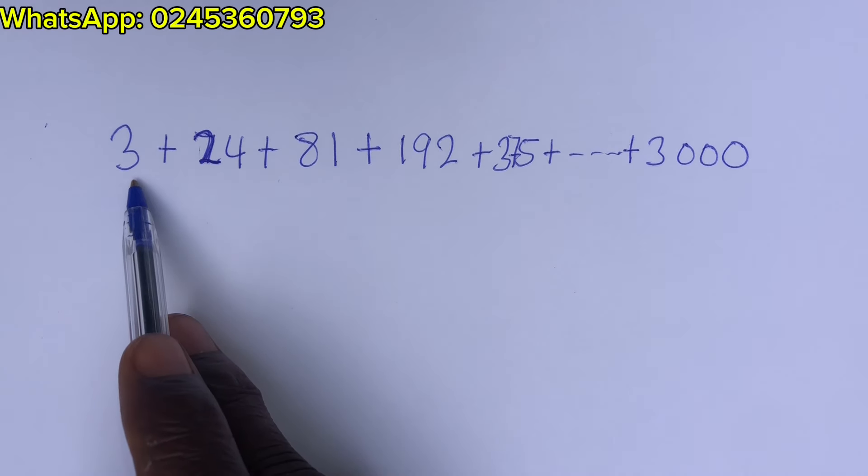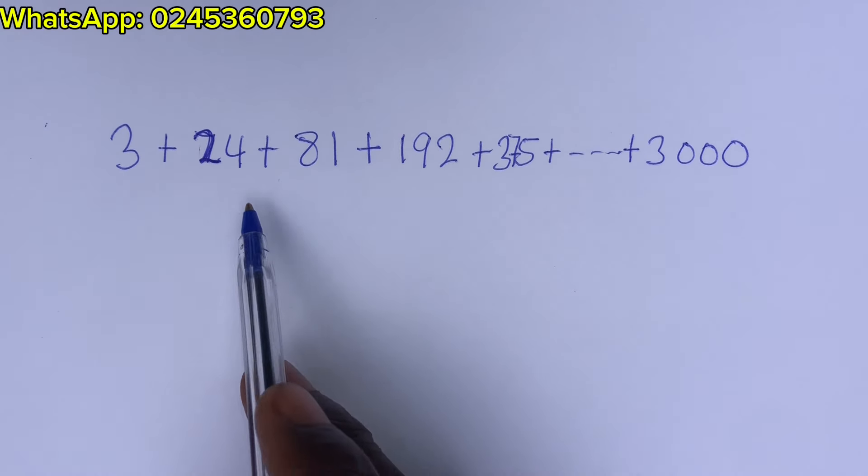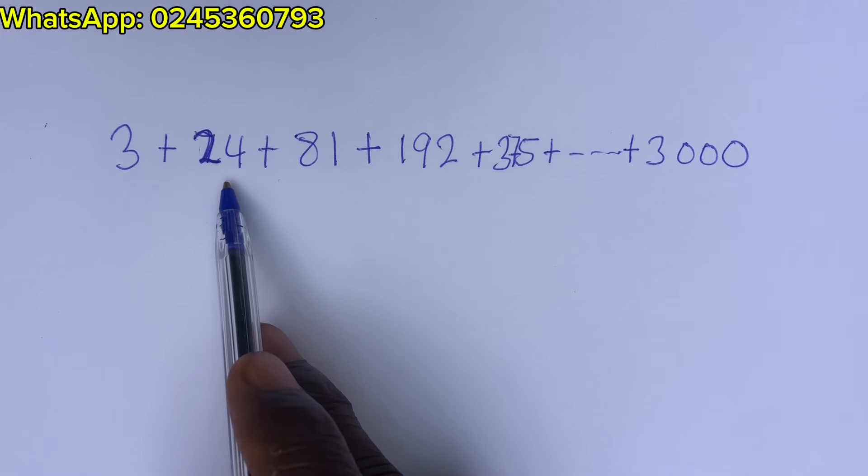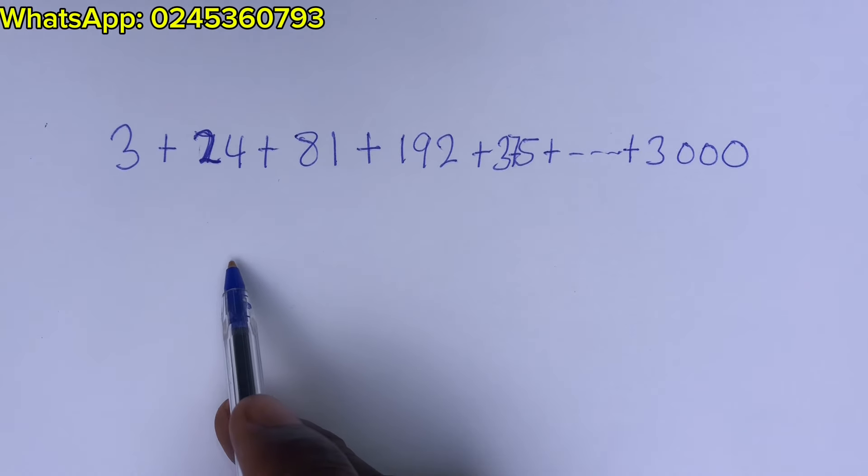If we divide 24 by 3, we get 8. If we divide 81 by 24, we're not getting 8. So it is not an exponential relation or something like that.